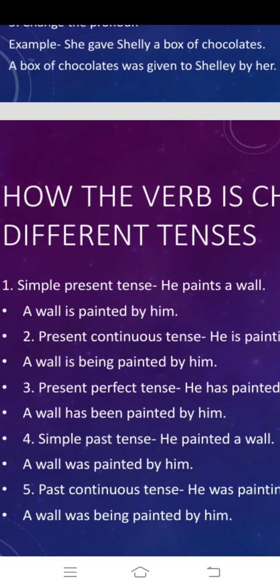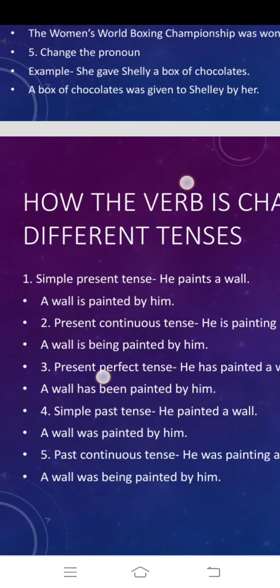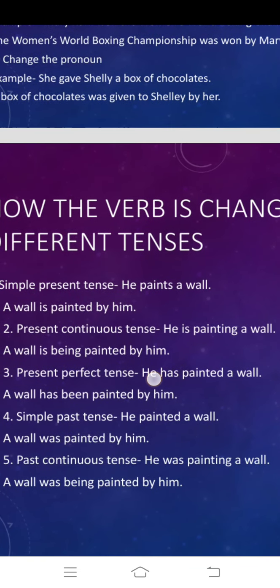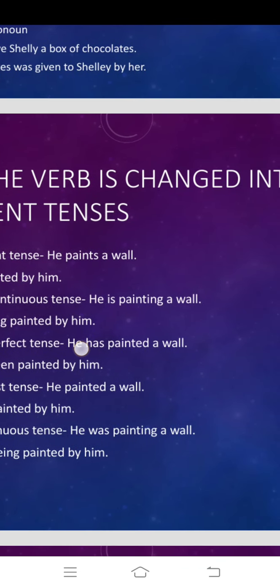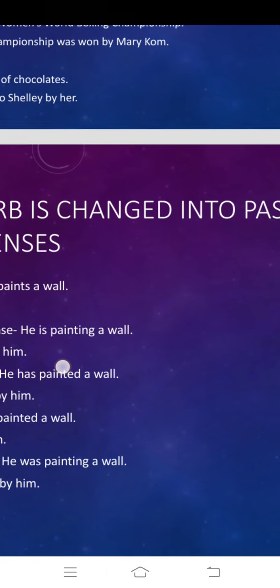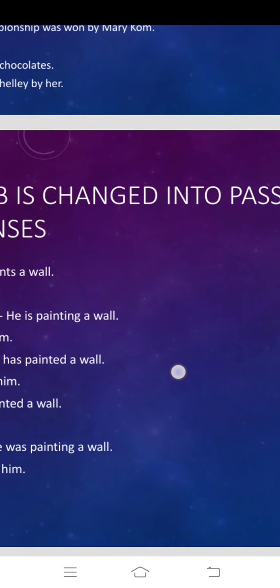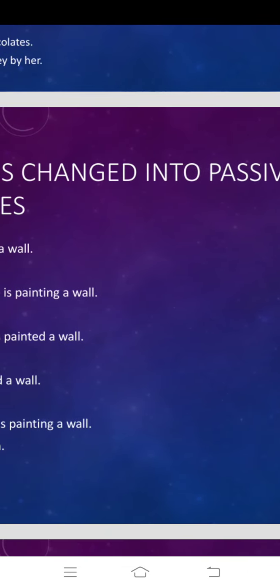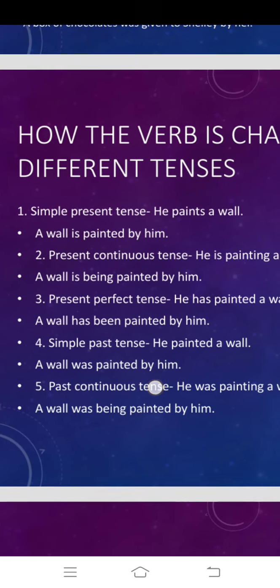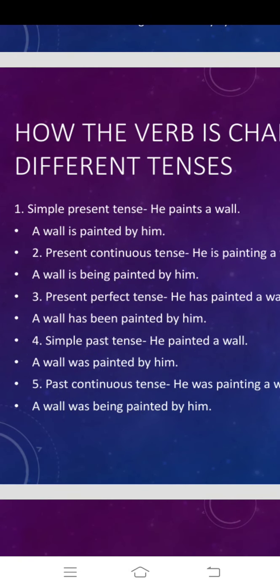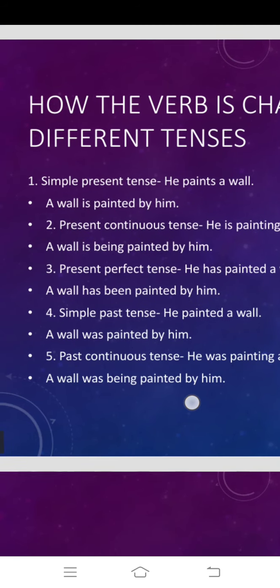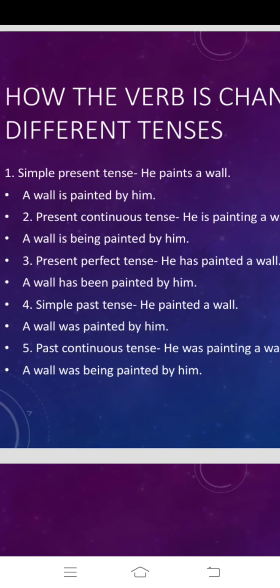Now let us move to slide number three. Here I am going to discuss how the verb is changed into passive voice in different tenses. This is very important. Whenever sentences are given to you, you have to check the tenses and accordingly the sentence is changed. Number one: an example in simple present tense.